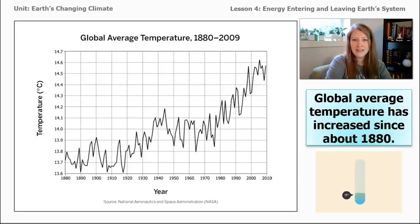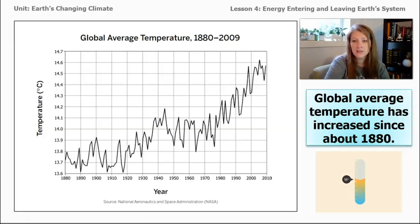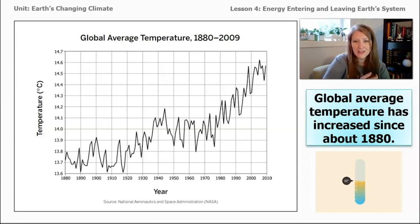We took a look at this graph in a previous lesson, and the evidence we collected in the SIM during lesson three showed that changes to carbon dioxide, methane, and sulfur dioxide could increase temperature on our planet. But we need to find out if any of these gases have actually been changing over time on our planet.